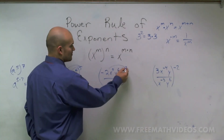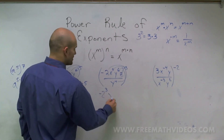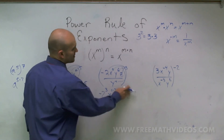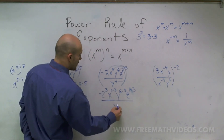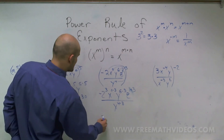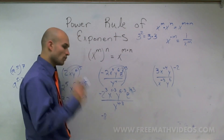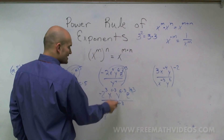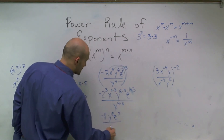Here, I need to distribute this 3 to each one of my terms, even terms on the denominator. So I have negative 2 to the 3rd power, x to the 0 times 3, y to the 6th times 3, and z to the 1 times 3, all over y to the 4 times 3. Negative 2 times itself 3 times is negative 8. x to the 0 times 3 is x to the 0, which equals 1, so I can drop it. That gives me negative 8, y to the 18th, z to the 3rd, all over x to the 12th.